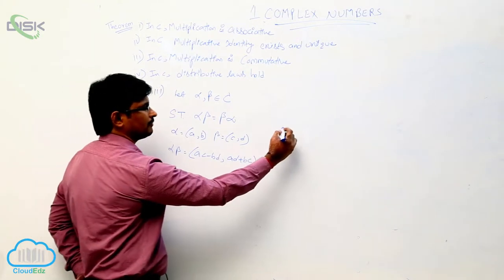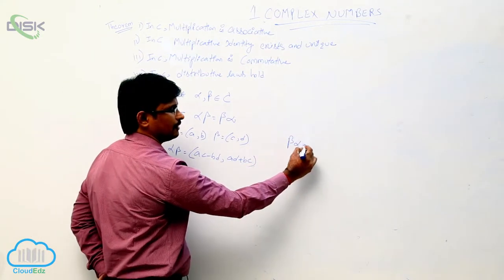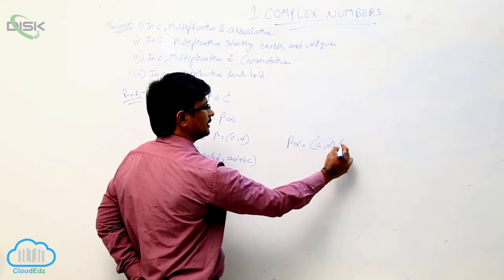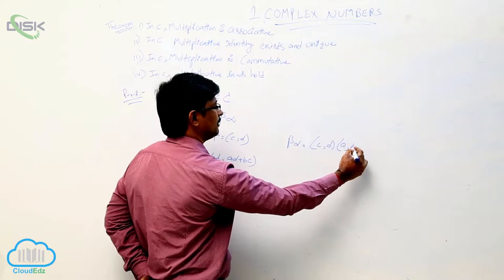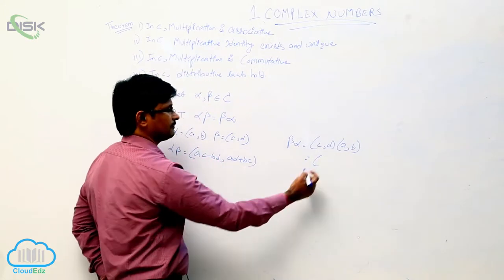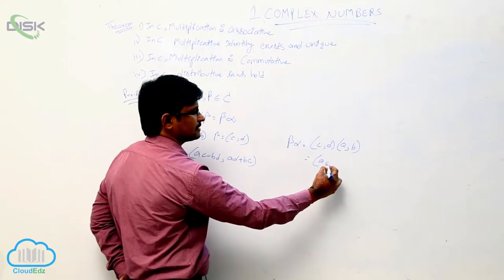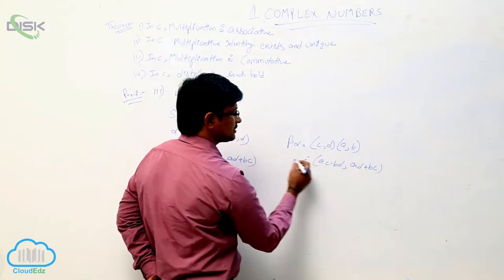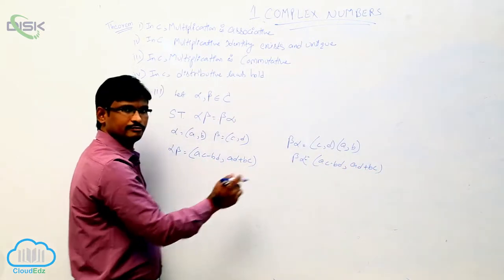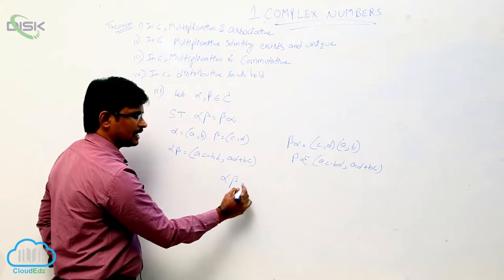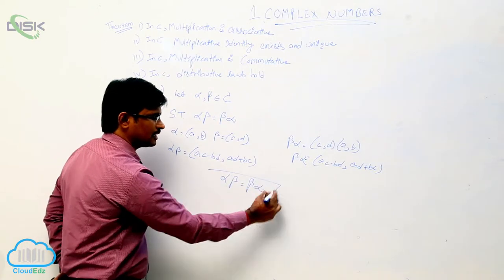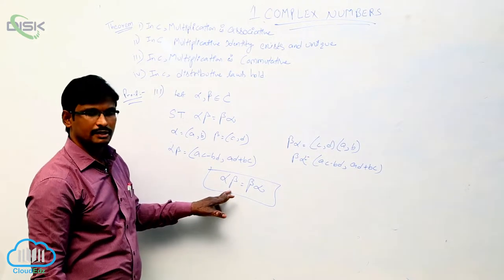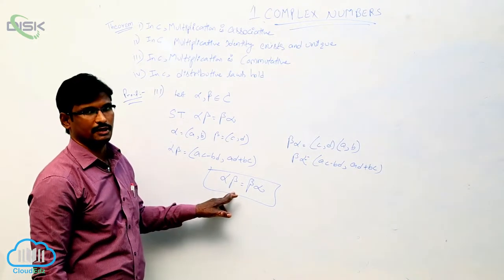Now what will be the value of beta·alpha? Beta is (c, d) into alpha which is (a, b). If you multiply, what we are getting is (ac − bd, ad + bc), which is the same as alpha·beta. So alpha·beta and beta·alpha are both the same, which means multiplication satisfies the commutative property.